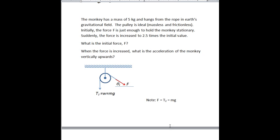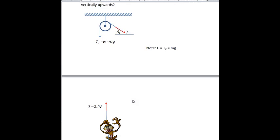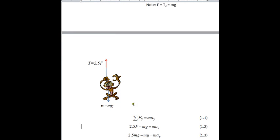Now the second part: suddenly that force is increased to 2.5 times its initial value, so it goes to 2.5 times F, or 2.5 times mg. So in this case we need to consider the free body diagram of our perilous passenger, taking into account the information we've already learned.